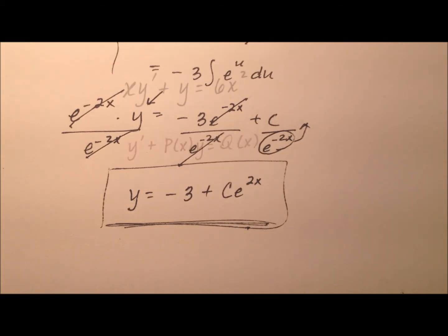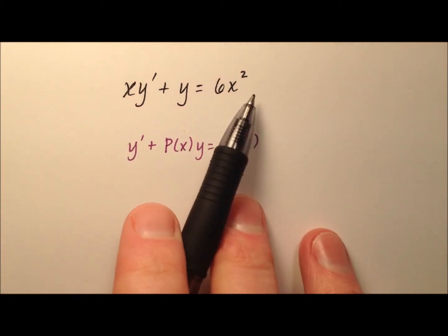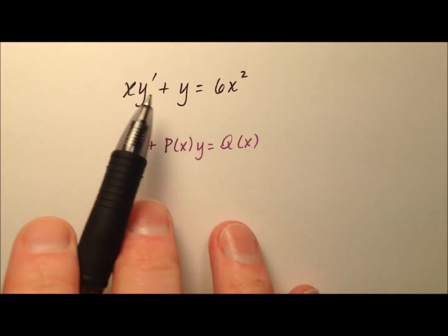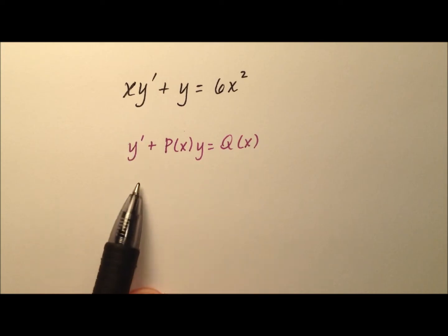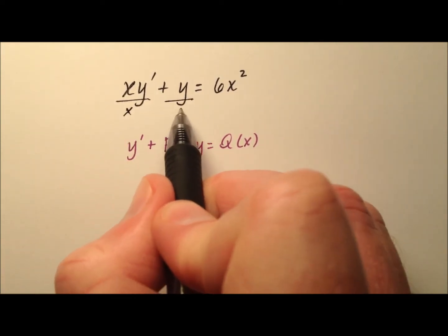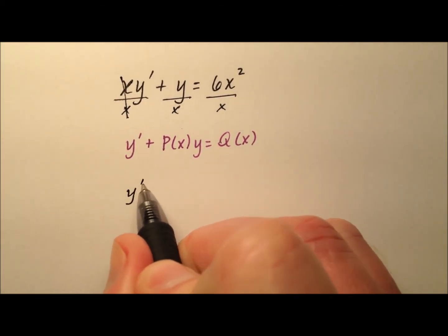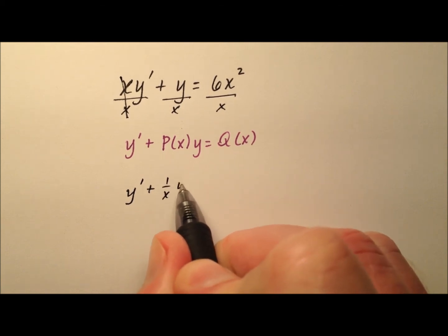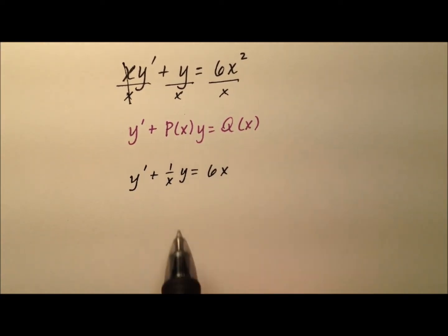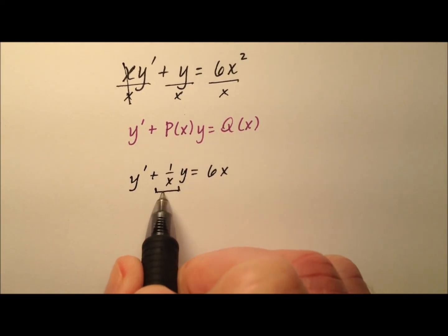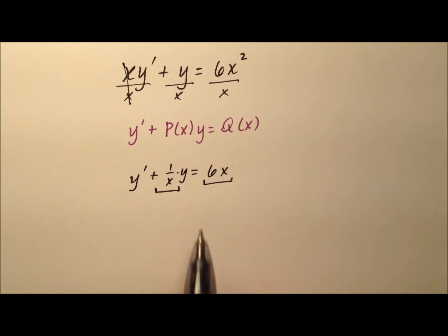In this second example, the differential equation is not quite written in linear form, but it is first order because the highest derivative is the first derivative. To get y prime by itself, we divide every term by x. The x's cancel, giving us y prime plus 1 over x times y equals 6x. Now it's written in linear form, where p of x is 1 over x and q of x is 6x.